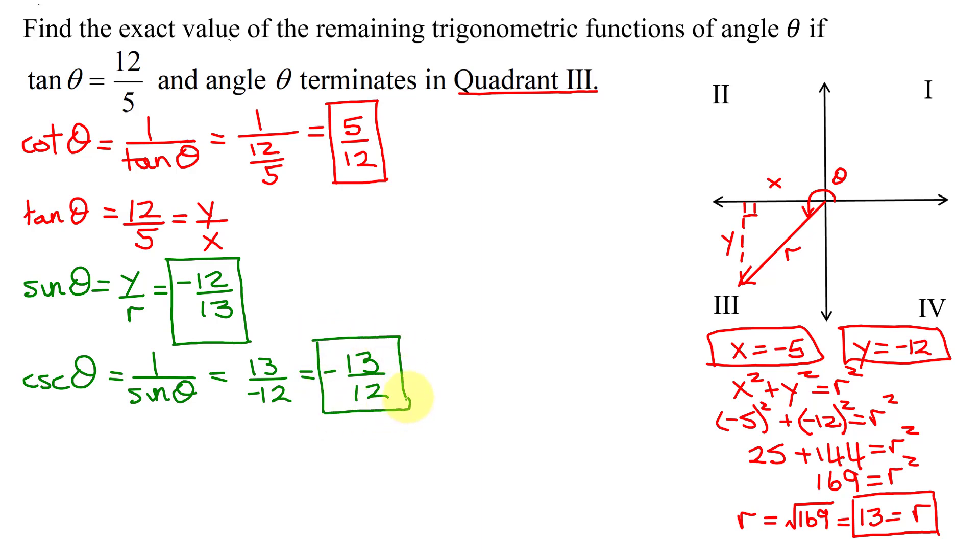And lastly, we need to find the cosine function and its reciprocal. The cosine of theta defined in terms of x, y, and r is x over r. x was negative 5, r was 13, so the cosine of theta is negative 5 thirteenths.